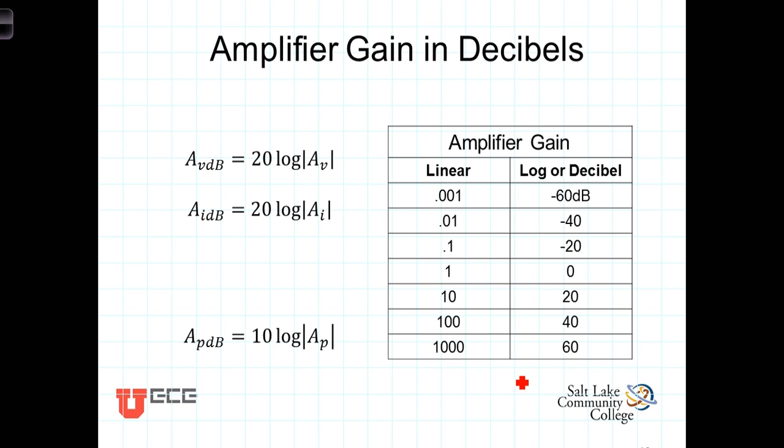There's a linear scale and a logarithmic scale. The linear scale is just a straight linear value. If the output was 10 times as big as the input, then A_v would just be 10. If it was 1000 times bigger, then A_v would be 1000.